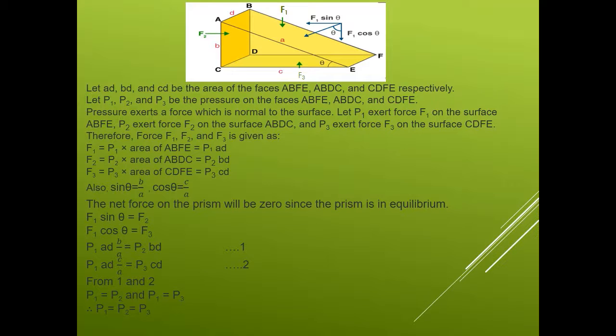Now putting the values of F1 in these equations, we will get: P1·AD multiplied by B upon A, and this is equal to P2 multiplied by BD. And the second equation is: P1 multiplied by AD multiplied by C upon A, and this is equal to P3 multiplied by CD.